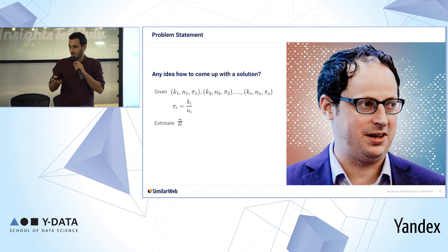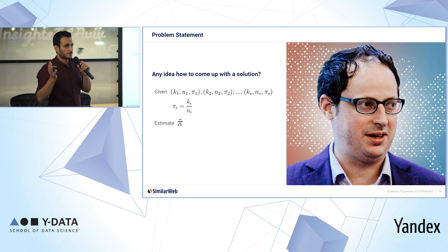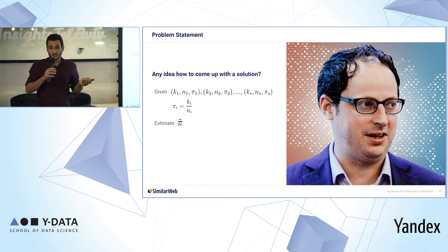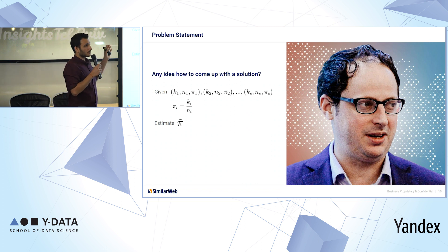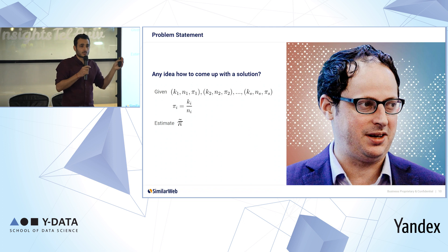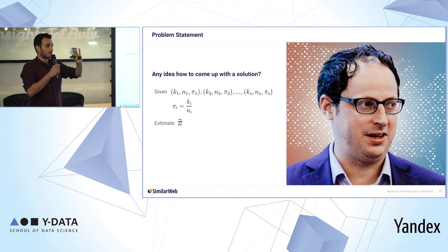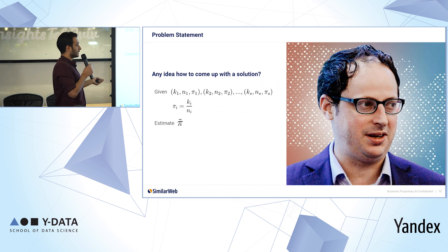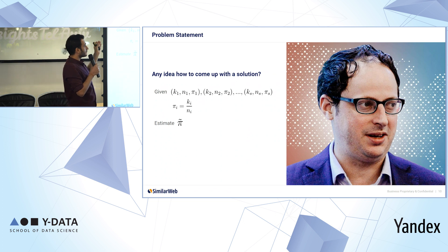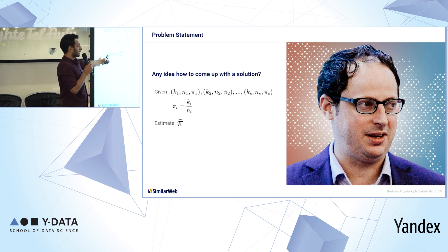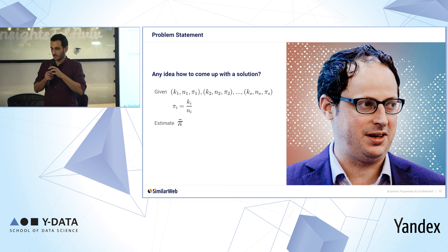Do you have any idea how to come up with a solution? Before hearing your thoughts, I want to say this situation is similar to what Nate Silver faced when he had to predict US elections, I think around 2006. He had several panels of users throughout the US made of different demographic characteristics, and his pi tilde would be the percentage of Republican Party voters. It's kind of the same — we have s panels and we need to come up with one pi tilde, the percentage of app active users.